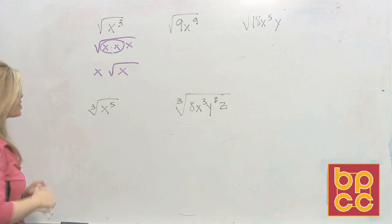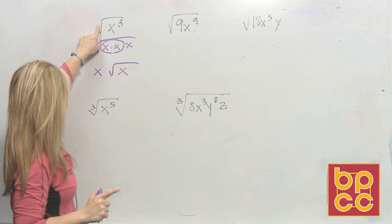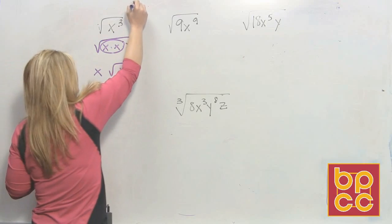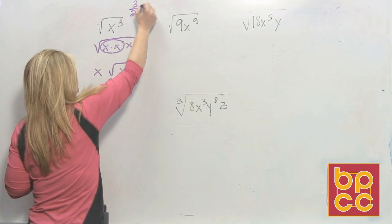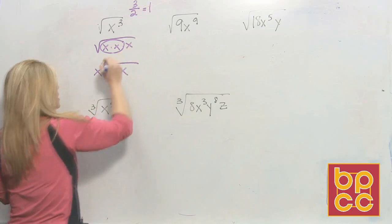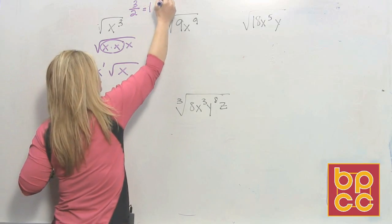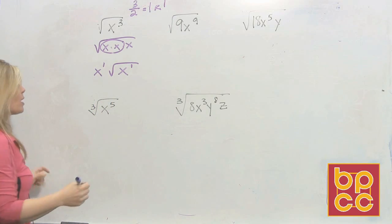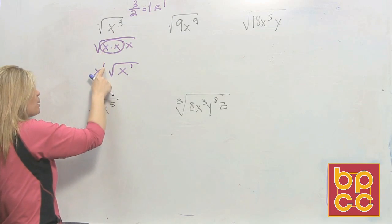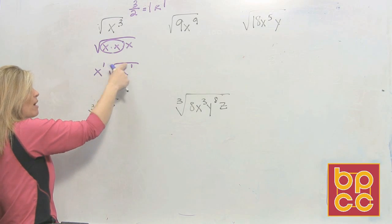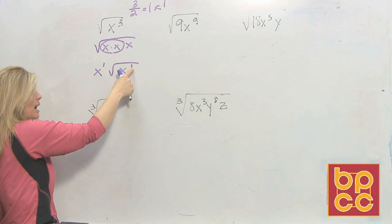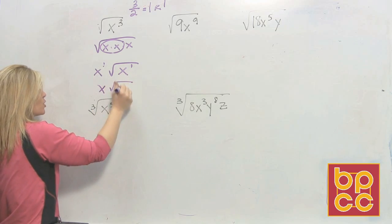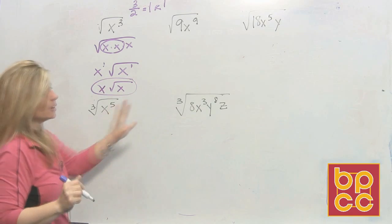So we're going to use the same rule: to square root a variable, you divide the exponent by 2. How many times can you divide 3 by 2? 2 goes into 3 once, with a remainder of 1. The quotient goes on the outside, and whatever is left over stays on the inside. We don't write exponents of 1, so we write x times the square root of x.